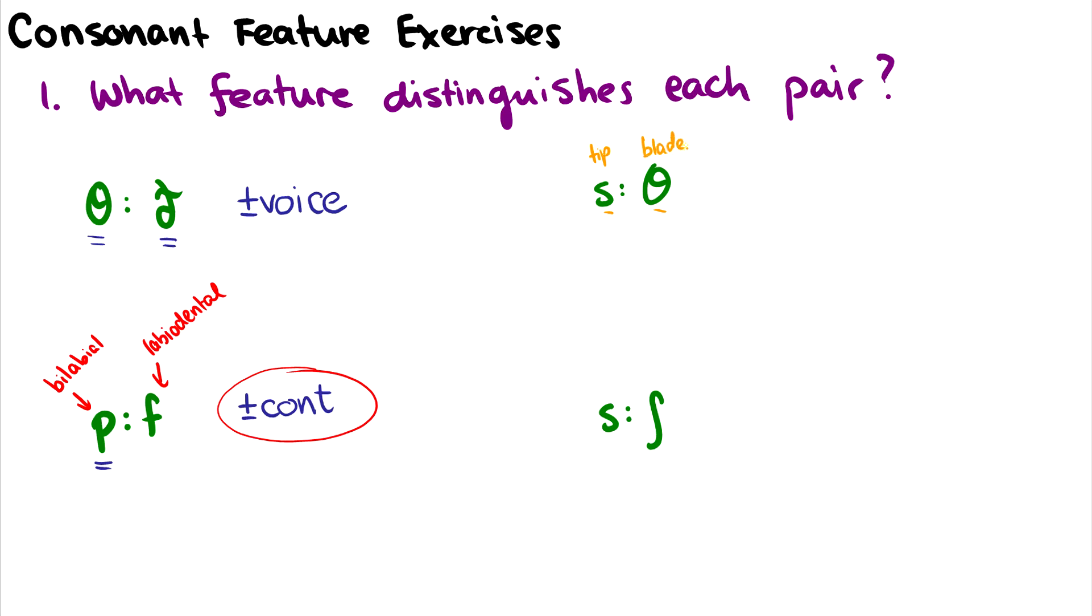And which feature separates these? This is the plus or minus distributed feature. So again, minus distributed is the tip of the tongue, and plus distributed is the blade of the tongue. So that is the feature separating s and θ.